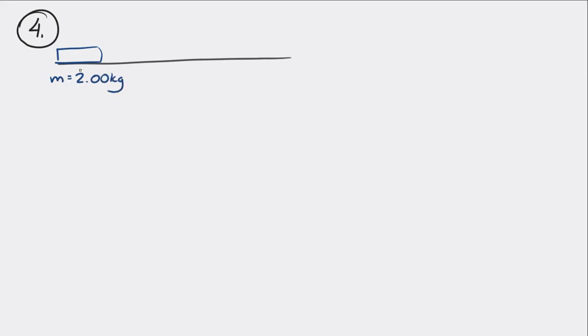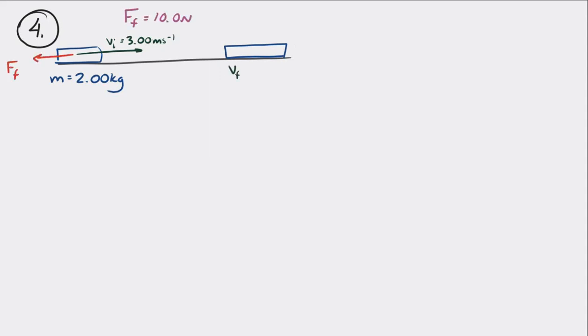Next, there's a book with a mass of 2 kilograms sliding on a flat surface. Initially it moves at 3 meters per second, but then a friction force of 10 newtons acts on the book as it slides, and it slows to a stop. Determine the displacement of the book using energy.